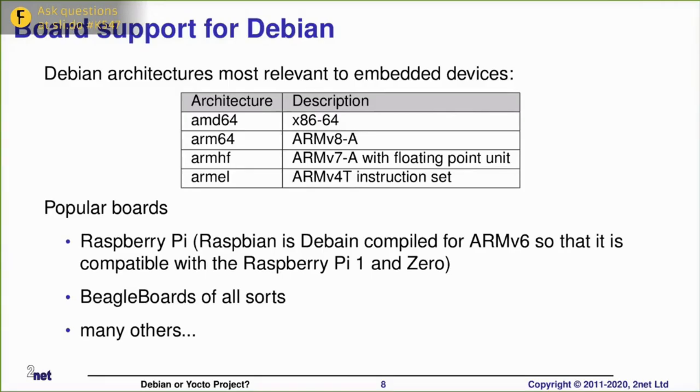Debian as an embedded OS has support for a bunch of architectures that are useful to us. x86-64, Arm v8, that's the 64-bit Arm architecture, Arm HF which is Arm v7 covering all the Cortex-A series processes in 32-bit. And the old Arm EL which supports the Arm v4T instruction set. Really you shouldn't be using that, but if you do, it is still supported.